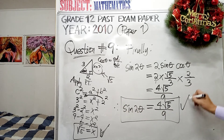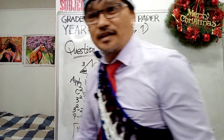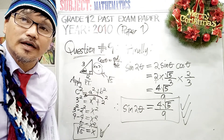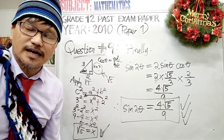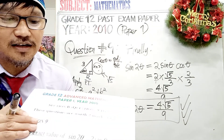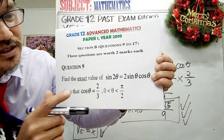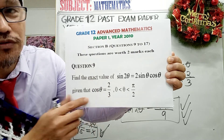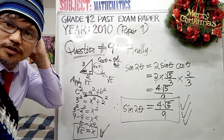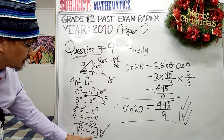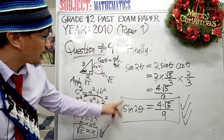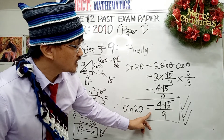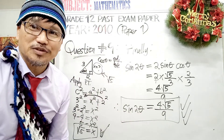This is the final and correct answer for question number 9. When the question asks for the exact value, you do not give a decimal answer — it should be an exact value. There are two steps, which is why it's worth 2 marks: first, find the missing side x = √5 using the Pythagorean theorem, then substitute into the expression to get sin 2θ = 4√5/9.